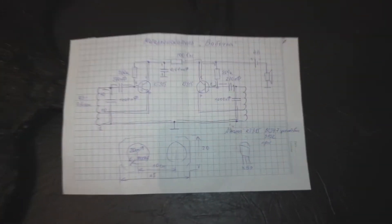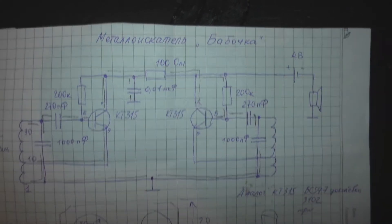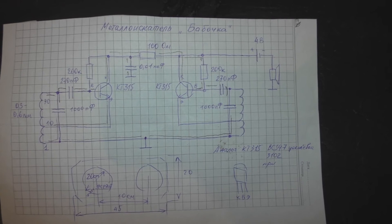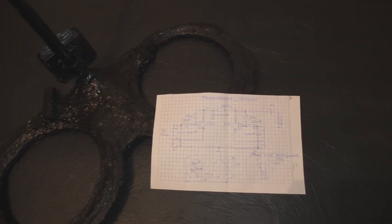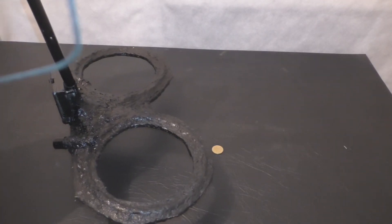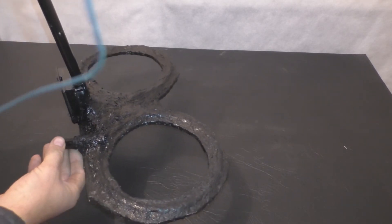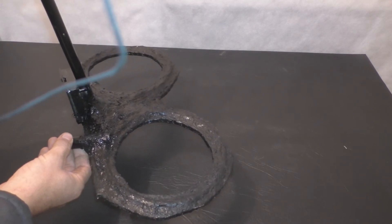By the way, here's the circuit of this metal detector. It's freely available on the internet: two transistors, two generators, two coils. And so I turned on our metal detector. We set the frequency on the verge of breakdown.